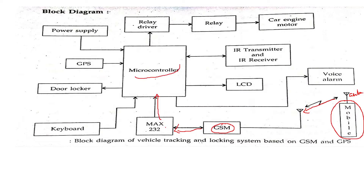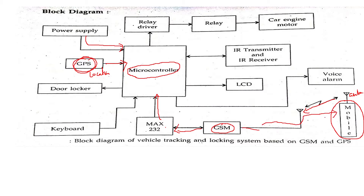The microcontroller takes the demand service which has come from the mobile asking the location of the vehicle. The location of the vehicle is obtained with the help of the Global Positioning System. You also have a power supply for this microcontroller. The GPS gives the location of the vehicle to the microcontroller, and then the microcontroller gives the information back to the owner, providing the vehicle's location. Then the owner sends an SMS.